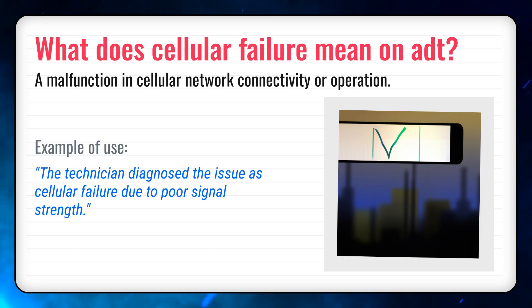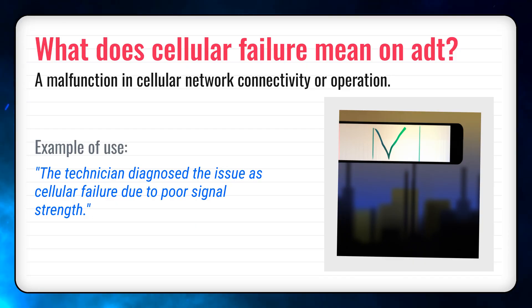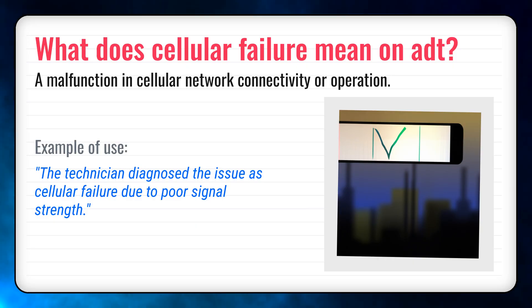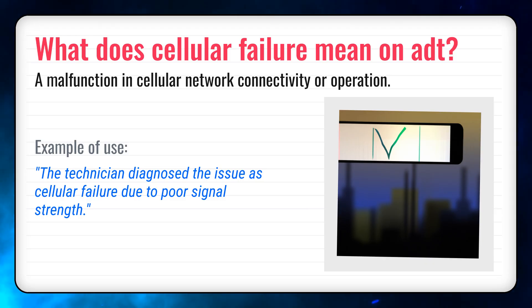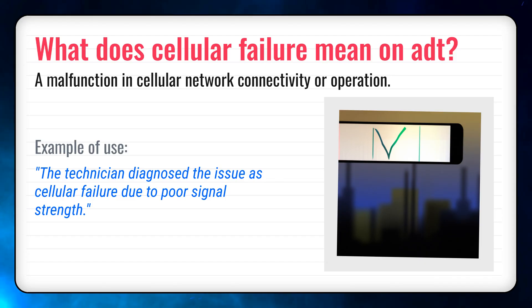Quick recap: cellular failure means a malfunction in cellular network connectivity or operation. It comes from the term cellular in telecommunications from the 1940s, and you can use it in sentences like the ones we shared. Now I'd love to hear from you — try writing your own sentence with cellular failure down in the comments. Get creative! And if you found this helpful, make sure to hit that subscribe button and join us for more word deep dives every day.